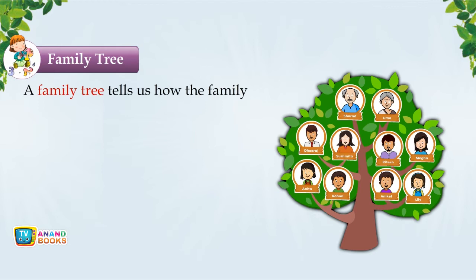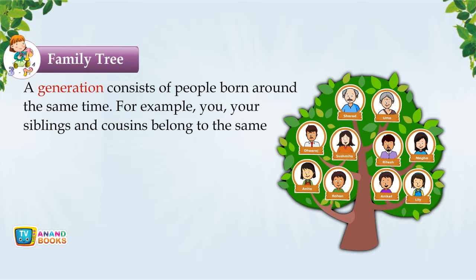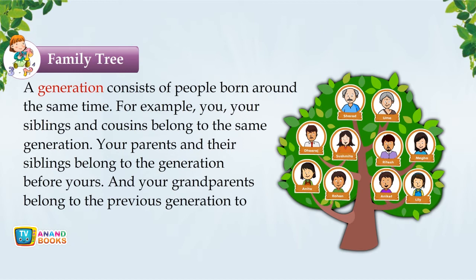Family Tree. A family tree tells us how family members are related to each other. It reveals the generation of people living in the family. A generation consists of people born around the same time. For example, you, your siblings and cousins belong to the same generation. Your parents and their siblings belong to the generation before yours, and your grandparents belong to the previous generation.